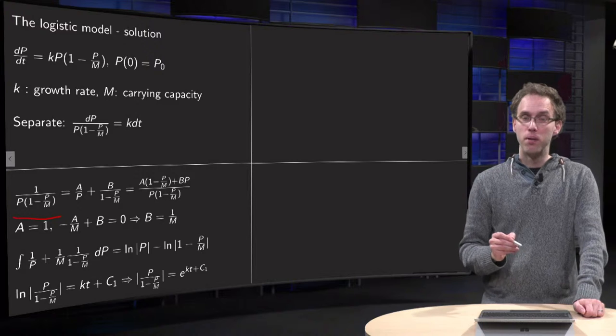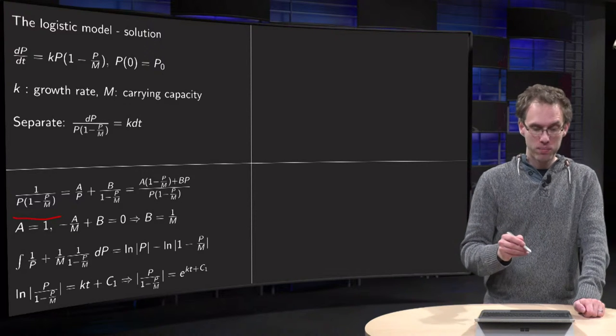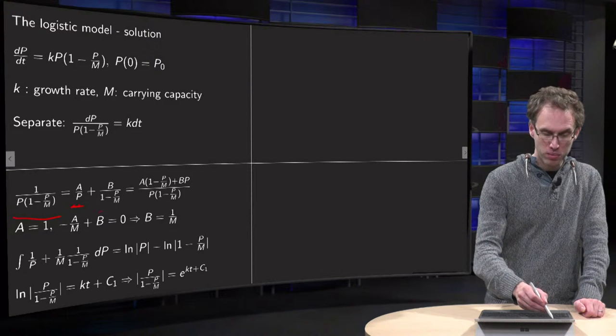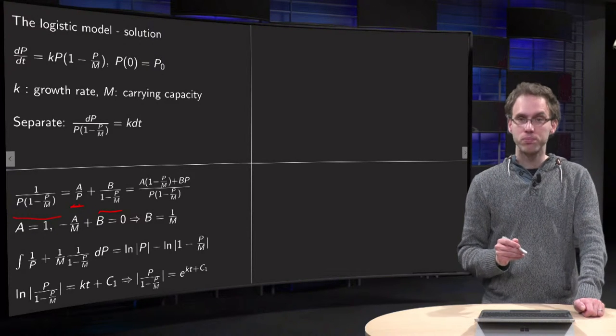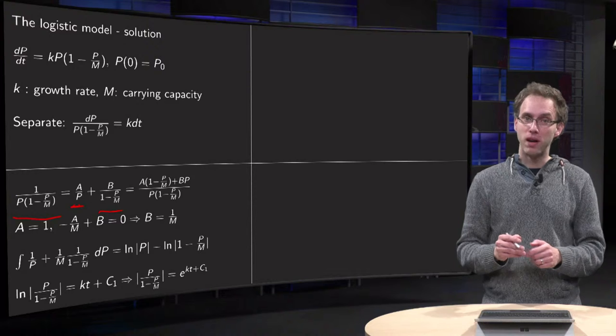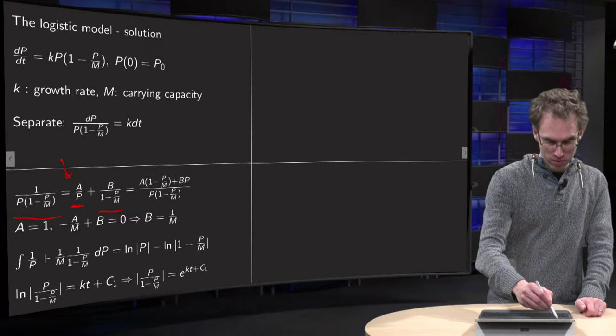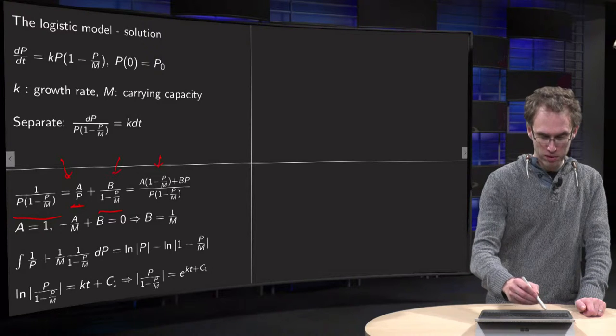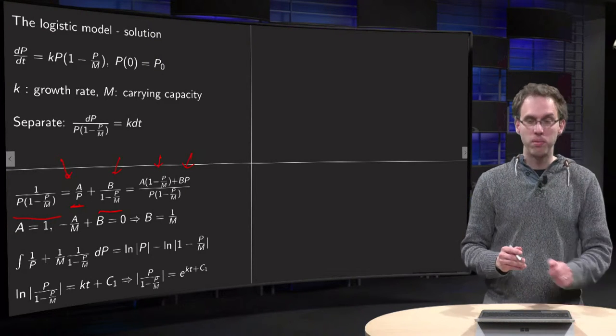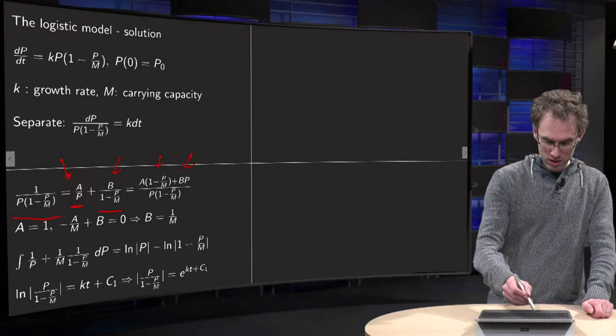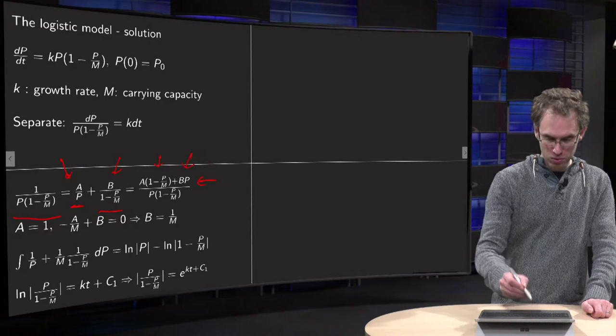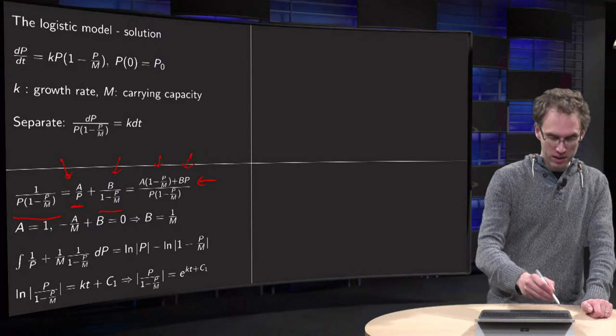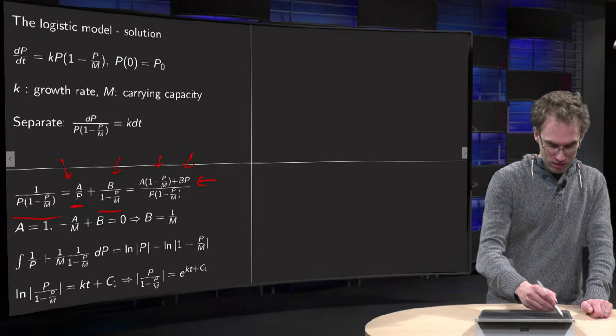So this 1 over P times (1 minus P over M) equals something over P plus something else over (1 minus P over M). Then multiply this term with (1 minus P over M), which is over here, and multiply this term with P, and combine. Then you see that this numerator has to be equal to 1 for all P's, so that means in particular that A has to be equal to 1.